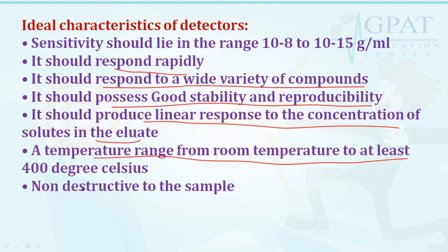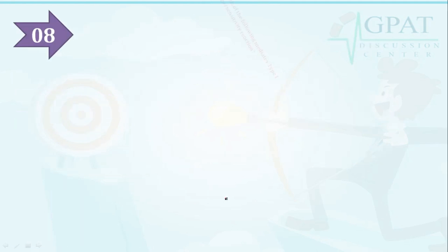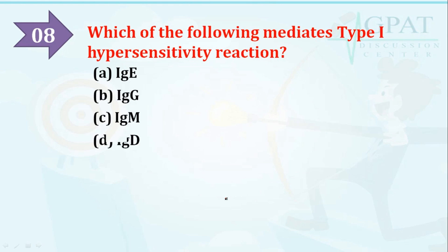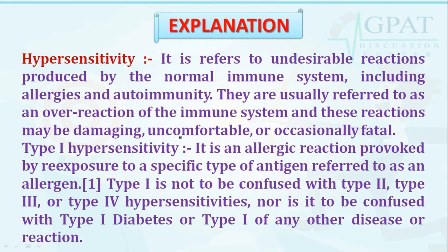Question number eight: which of the following mediates type 1 hypersensitivity reactions? Options are: IgE, IgG, IgM, or IgD. The right option is IgE — IgE mediates type 1 hypersensitivity reactions.